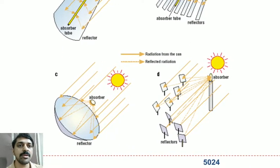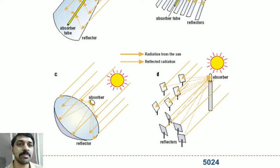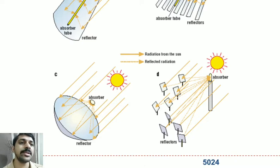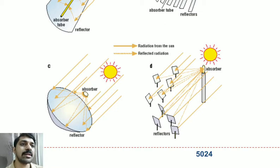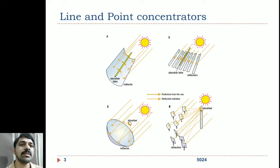Diagram C shows the paraboloidal dish where concentration is done onto a single point. The same applies to figure D, the central power receiver, which we will discuss in detail in the coming slides. Here, multiple mirror segments placed on the ground — known as heliostats — are arranged so that the entire solar energy falling on them is focused onto a very high point on the central tower where the absorber is placed. This illustrates the difference between line and point concentrating type collectors.